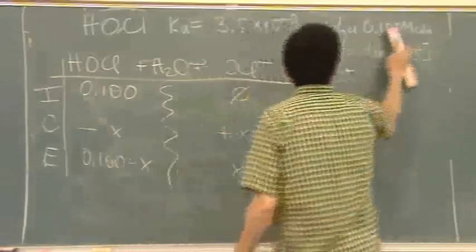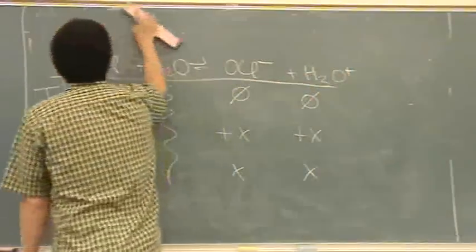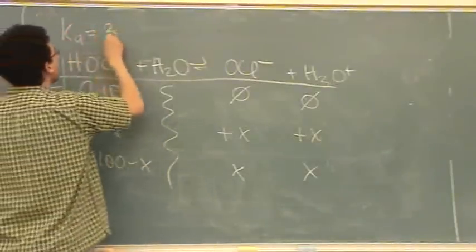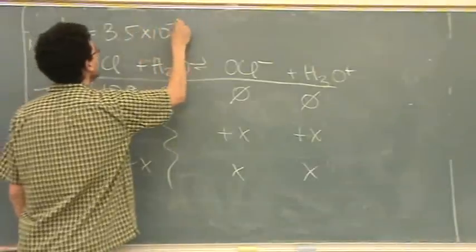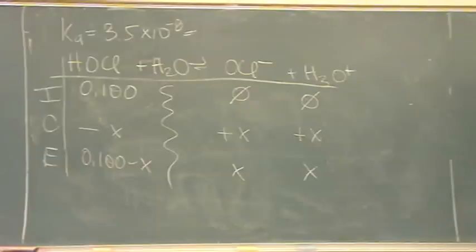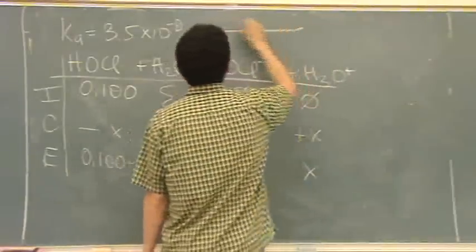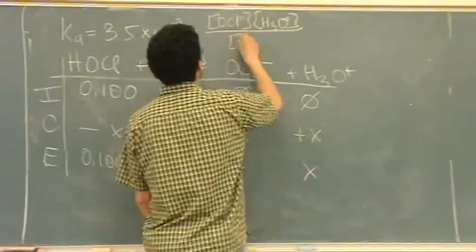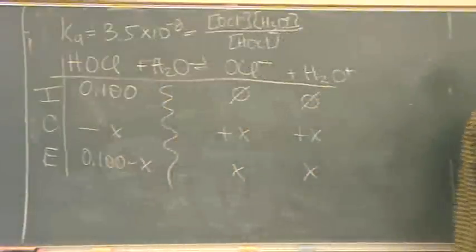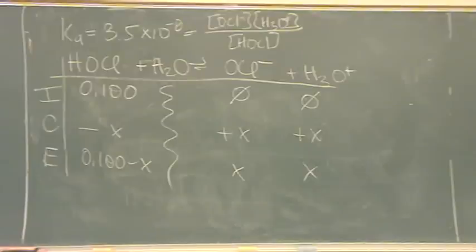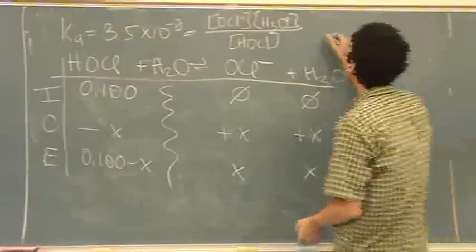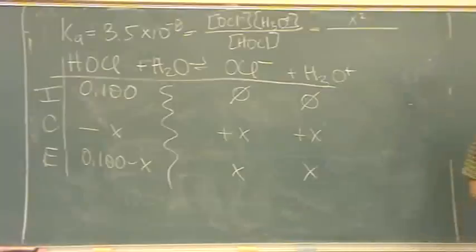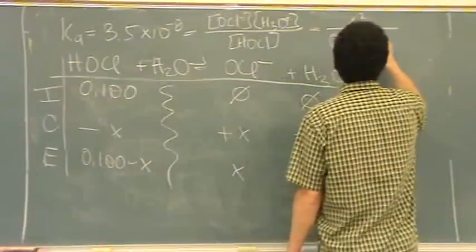I will erase the top and write out K, the equilibrium expression. Ka is equal, I already know this value, 3.5 times 10 to the minus 8. So that's the value given in the question. This is equal to the products over the reactants. Same as before. No new concept. This equals X times X, or X squared on top, divided by 0.100 minus X.